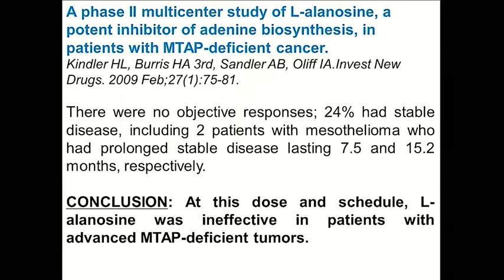Of about 40 patients, there were no objective responses. 24% had stable disease, including two patients with mesothelioma. The conclusion was that at this dose and schedule, L-Alanosine was ineffective in patients with advanced MTAP-deficient tumors.